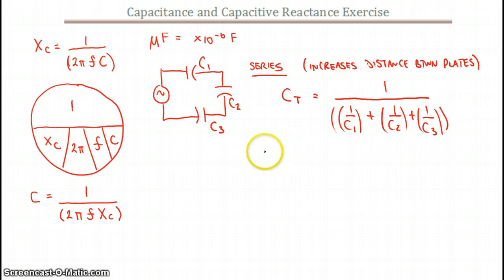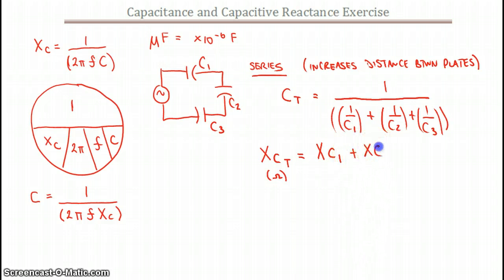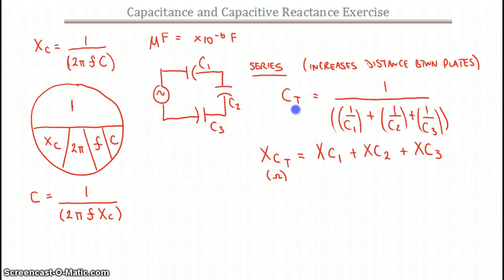Now the XC total value — remember, is an ohmic value. And we're going to treat capacitors in series the same as we would resistors in series. So we're just going to do XC1 plus XC2 plus XC3. The reactance on the first one plus the reactance on the second one plus the third one gives us our total reactance for the circuit — exactly the same equation as if they were resistors in series. Think of it this way: you've increased the distance between the plates, you've decreased the amount of charge that's going to be on the capacitor.